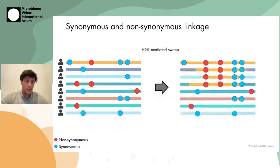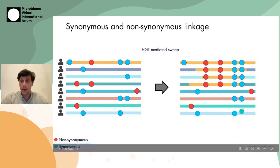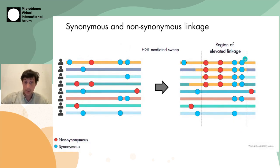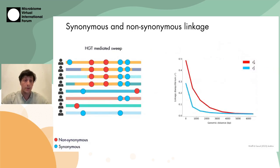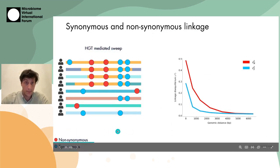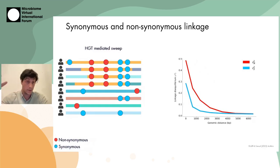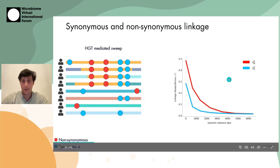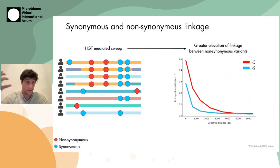Linkage is important because it is altered by selection. In particular, if we have adaptive horizontal gene transfer where a genetic segment is being transferred from strain to strain, what we end up with is a region of elevated linkage — all of these variants show up on exactly the same haplotypes. In addition to a general elevation of linkage, we also specifically tend to see an elevation of non-synonymous linkage. The greatest increase is in non-synonymous linkage, and this is a good signature that we have positive selection driven by recombination.